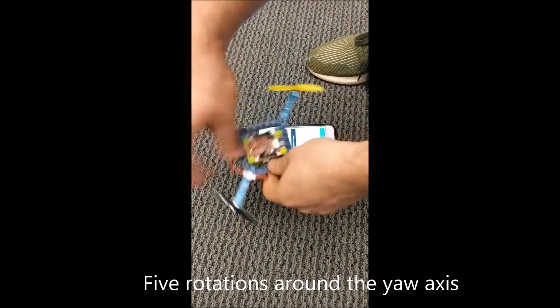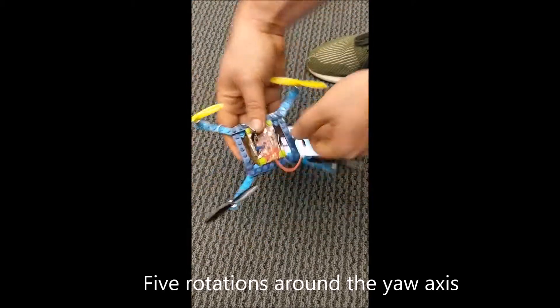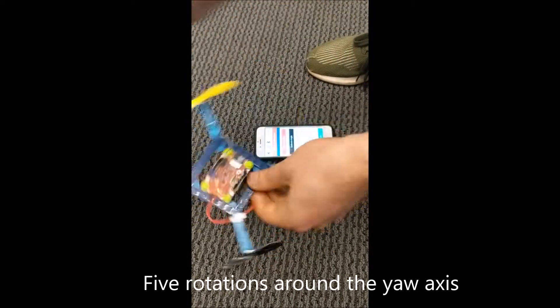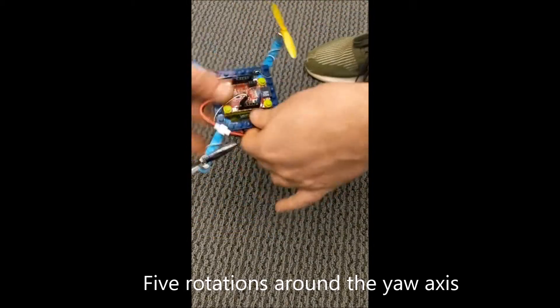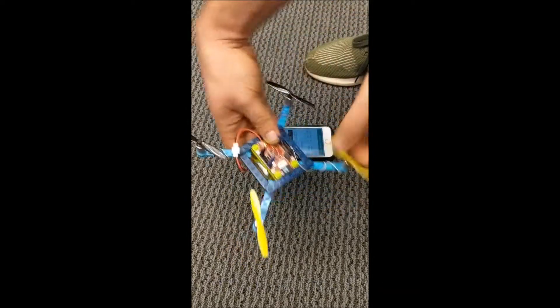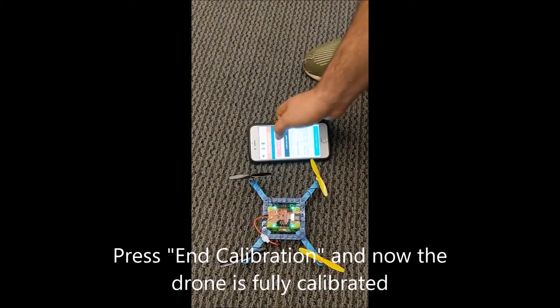One, two, three, four, five times around the yaw axis. And then tap end calibration.